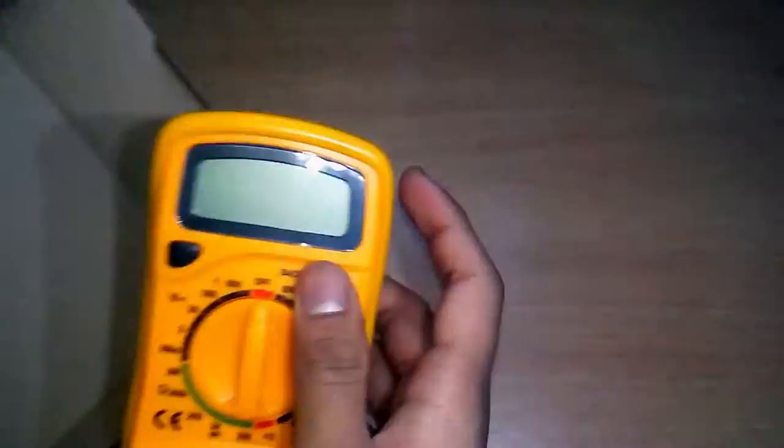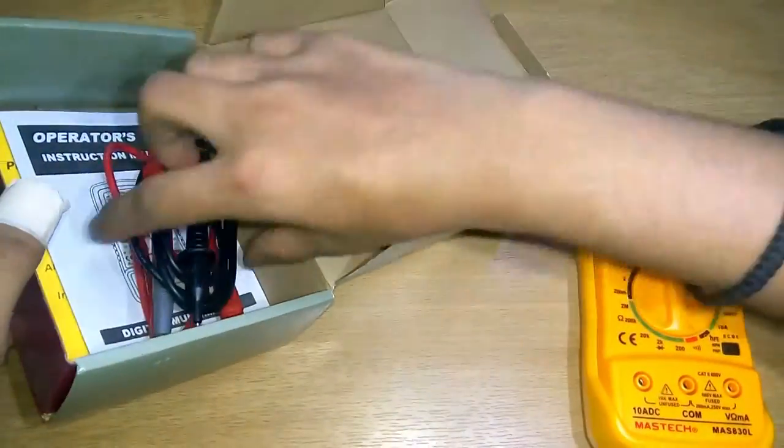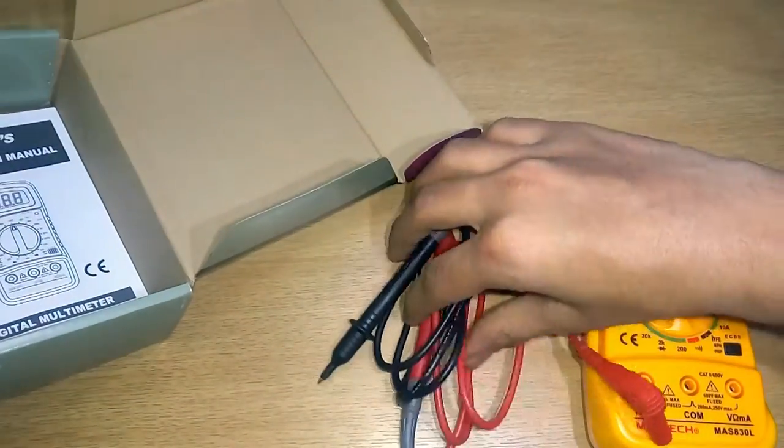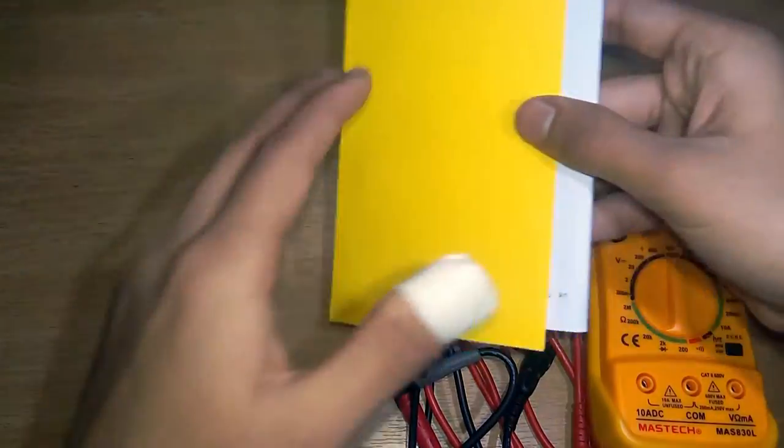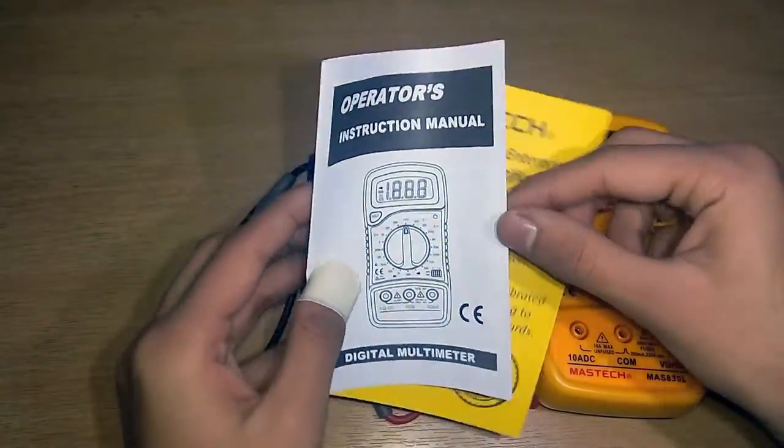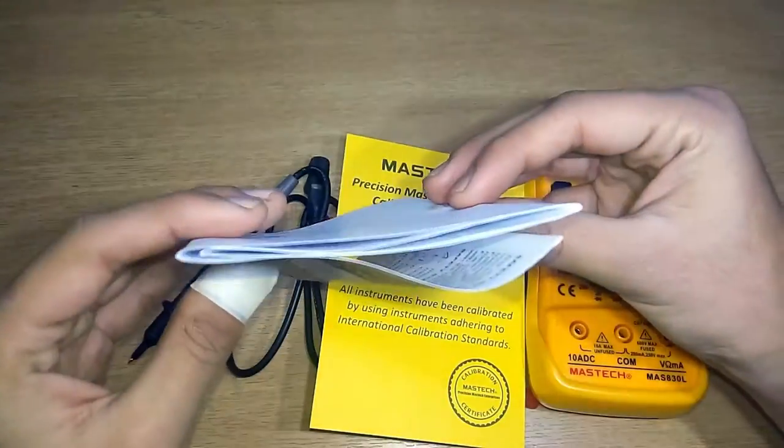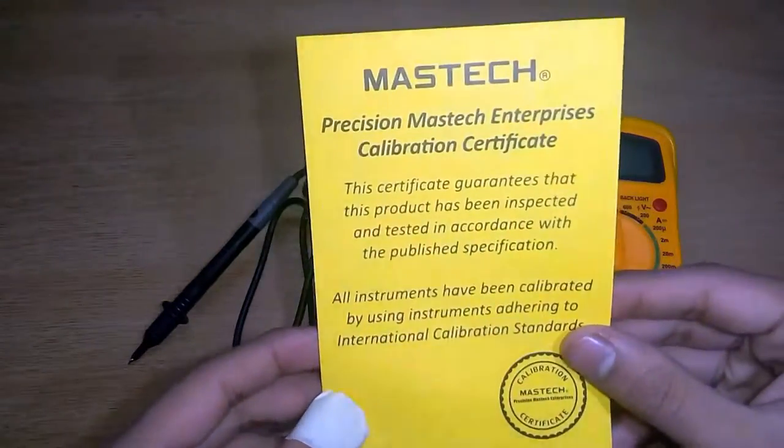I've already had a look at the multimeter. We have the multimeter, the probes, and a couple of papers included—some documentation, the operator's manual, a five or six page manual that's detailed. Also, we have the Mastec Precision Enterprise calibration certificate with the printed stamp.